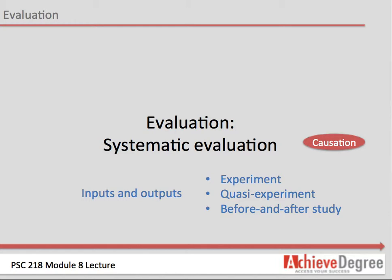Other problems with causation are that usually there is more than one cause contributing to an effect. Reducing the size of first-grade classrooms might help students excel, but states that can afford smaller classrooms are wealthier, which can also contribute to better learning. Some causes are necessary but not sufficient — for example, gas is necessary for a car to run, but gas alone will not make a car run; the battery must be charged and the engine must have oil.